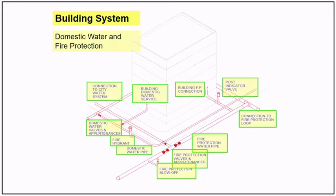Here are the major components of domestic water and fire protection. The following need preventive maintenance services, PM frequency, and routine inspection: valves, hydrants, pipes, and indicators.